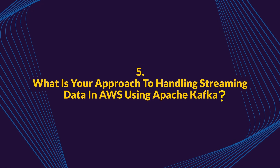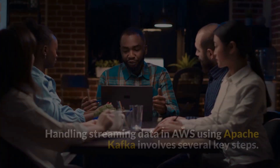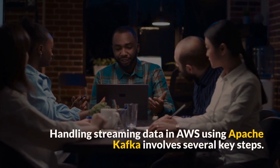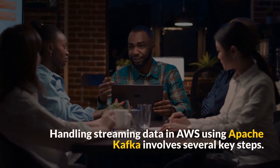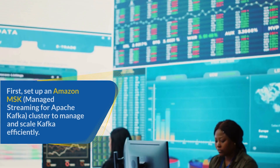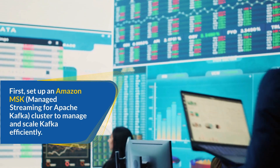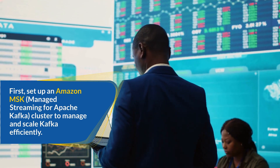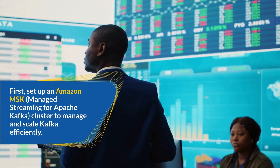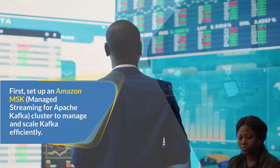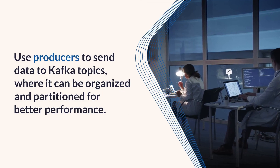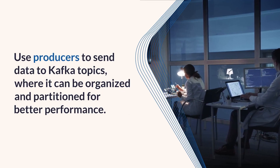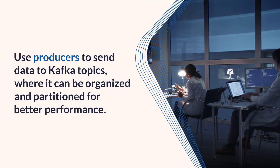Question 5: What is your approach to handling streaming data in AWS using Apache Kafka? Handling streaming data in AWS using Apache Kafka involves several key steps. First, set up an Amazon MSK (Managed Streaming for Apache Kafka) cluster to manage and scale Kafka efficiently. Use producers to send data to Kafka topics, where it can be organized and partitioned for better performance.